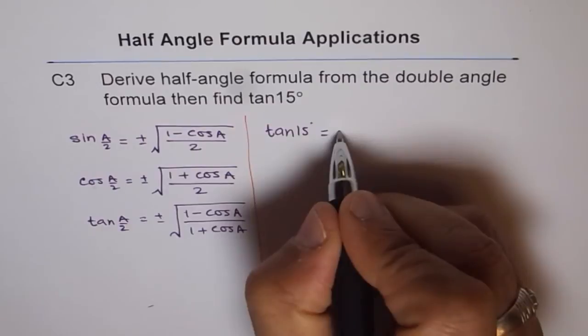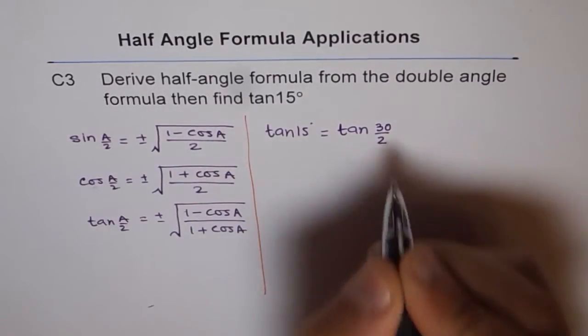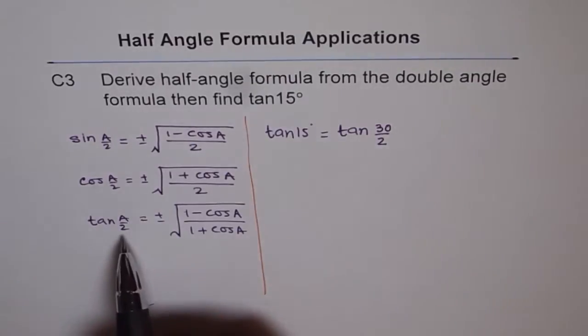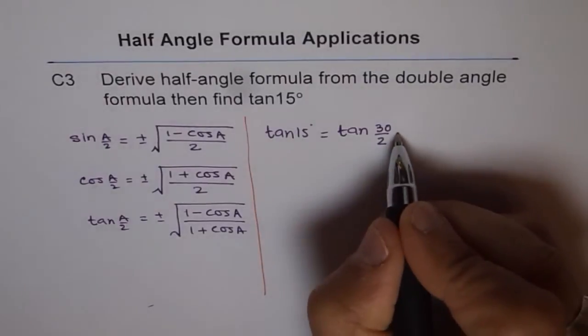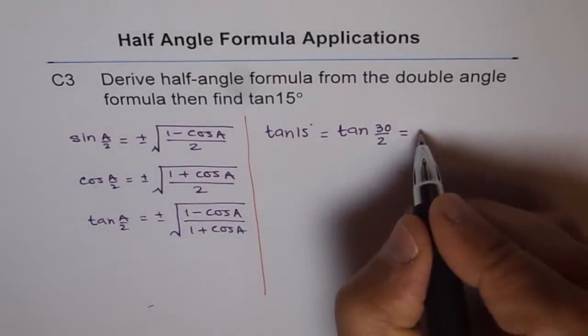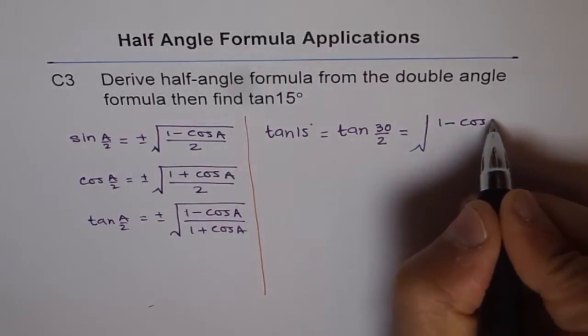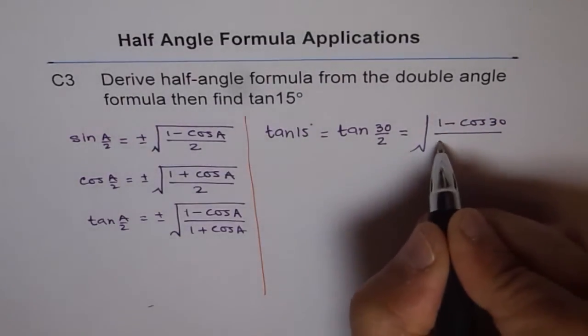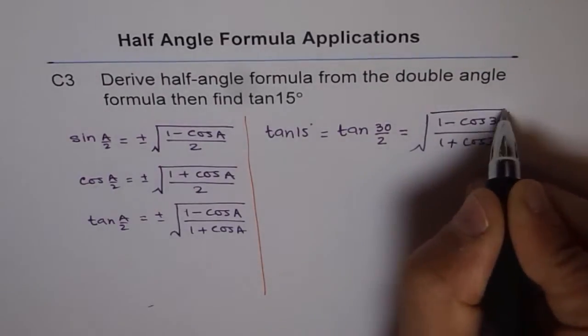So, this is equals to tan of 30 divided by 2. So, think like this. We are applying this formula. A is 30. 30 divided by 2 is 15. So, A is 30. So, I could write this as equal to square root of 1 minus cos 30 divided by 1 plus cos 30 degrees.